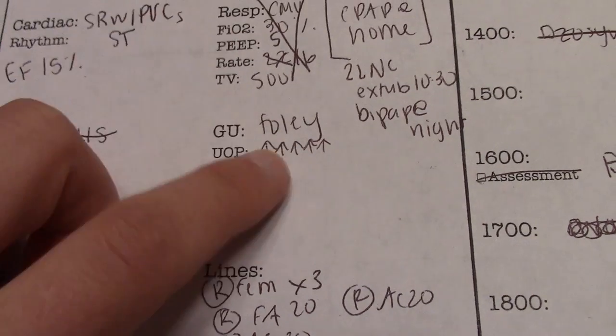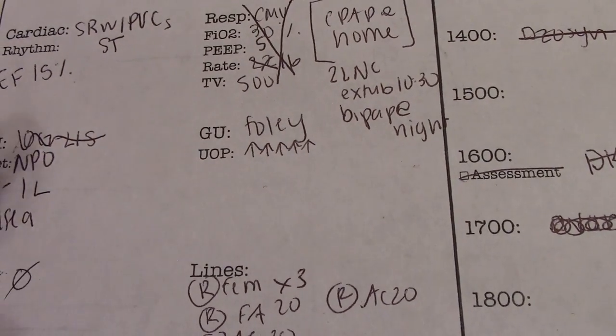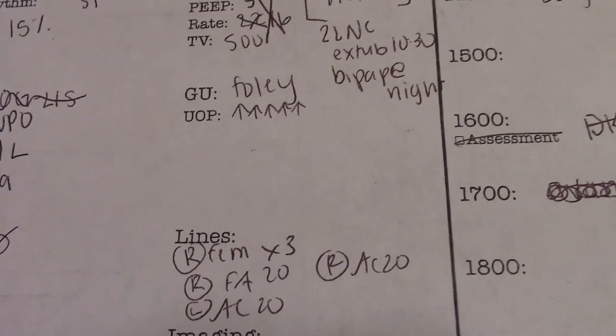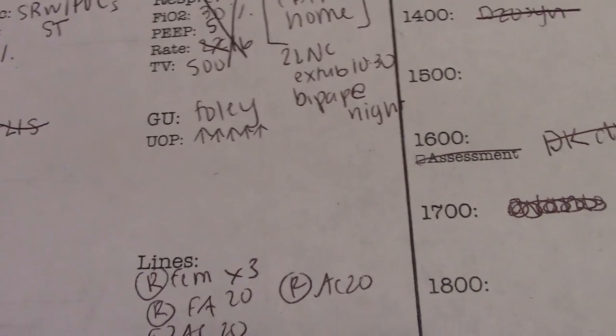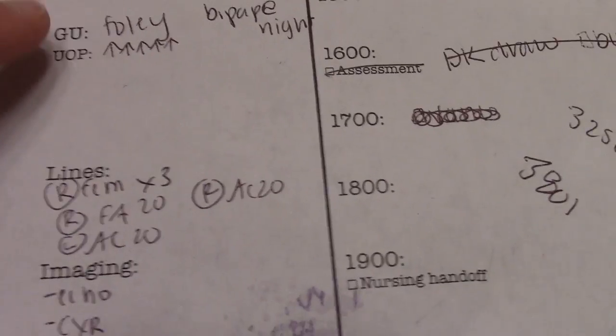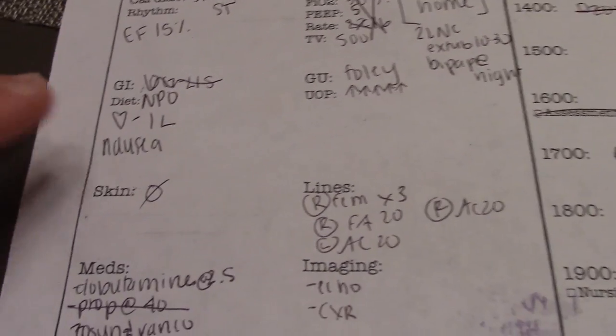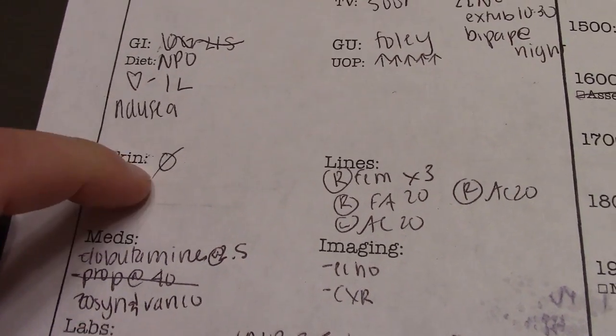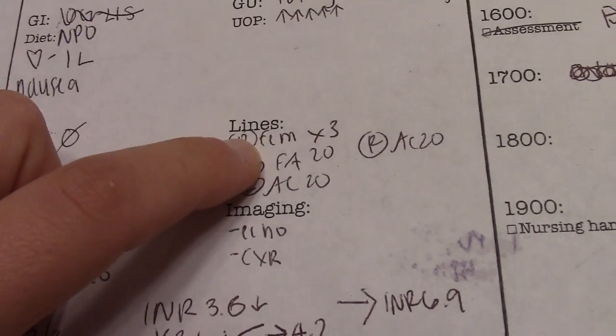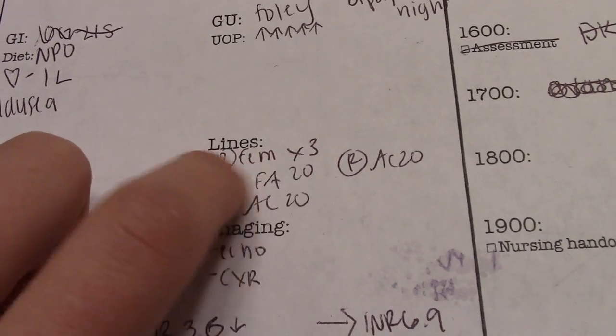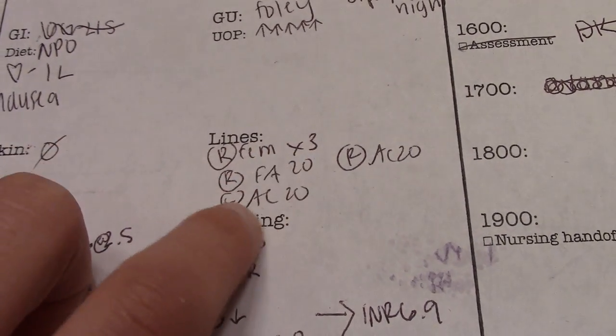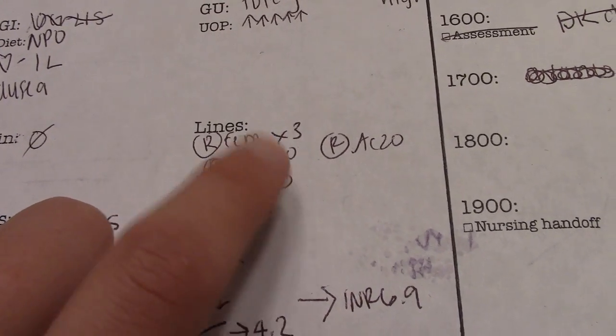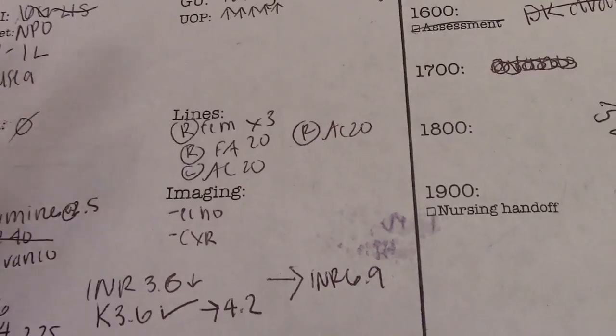GU-wise, patient had Foley with increased urine output. Sometimes I'll put an amount like between 200 and 250 or less than 30, or note if urine is amber. I might put more specific details, but on this day I just didn't. No skin issues - this is where I'd put wounds or pressure ulcers. Lines: right femoral times three, this is a central line with three lumens. IVs: right forearm 20 gauge, left AC 20 gauge, right AC 20 gauge.